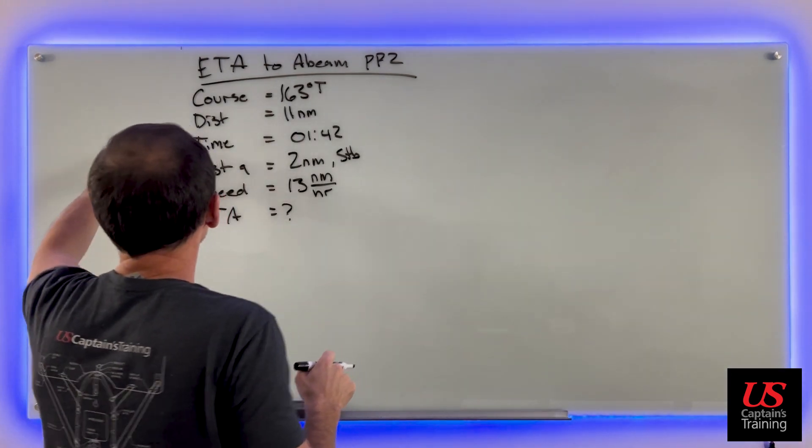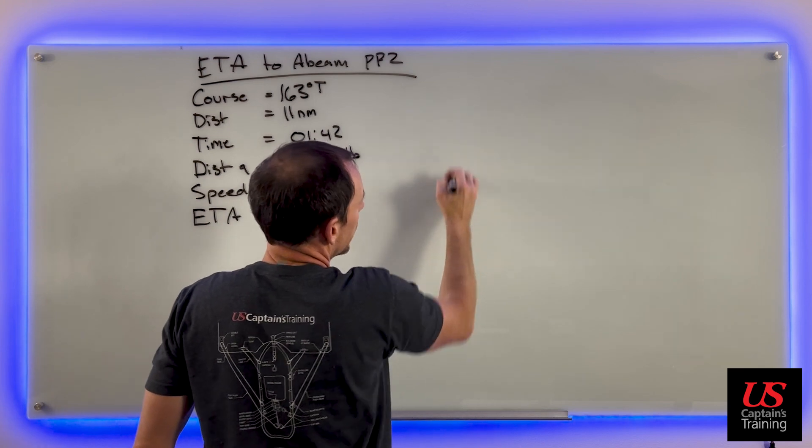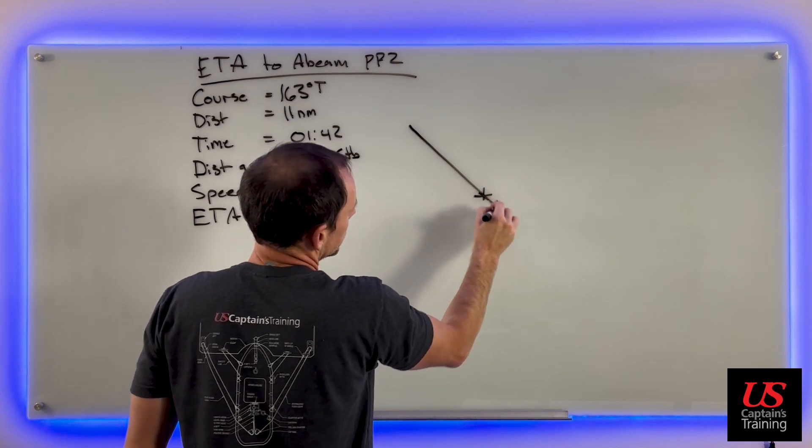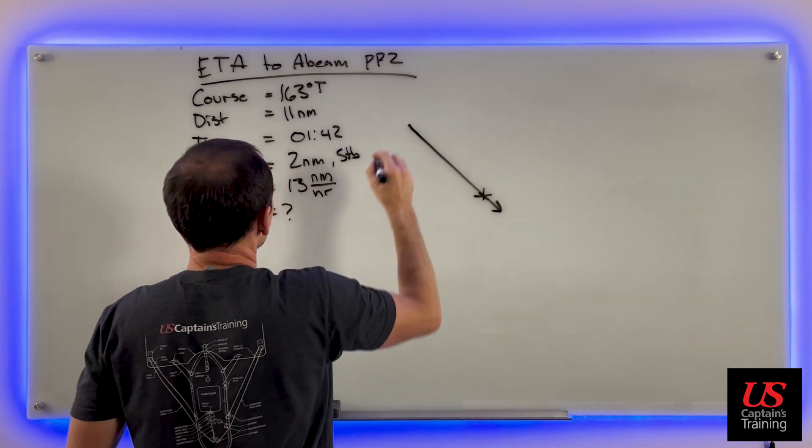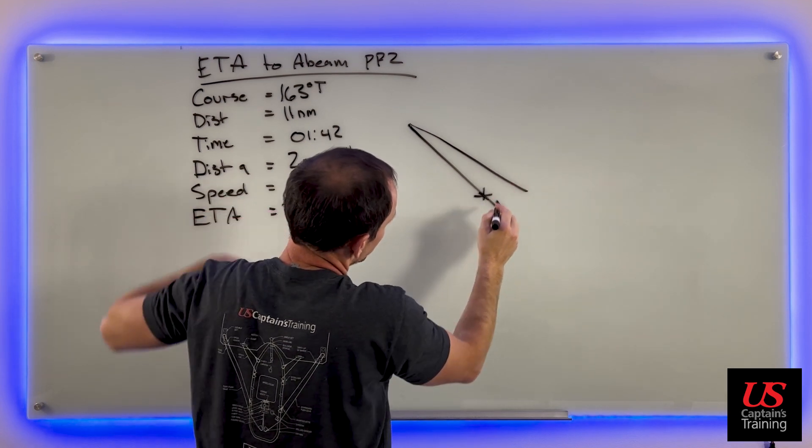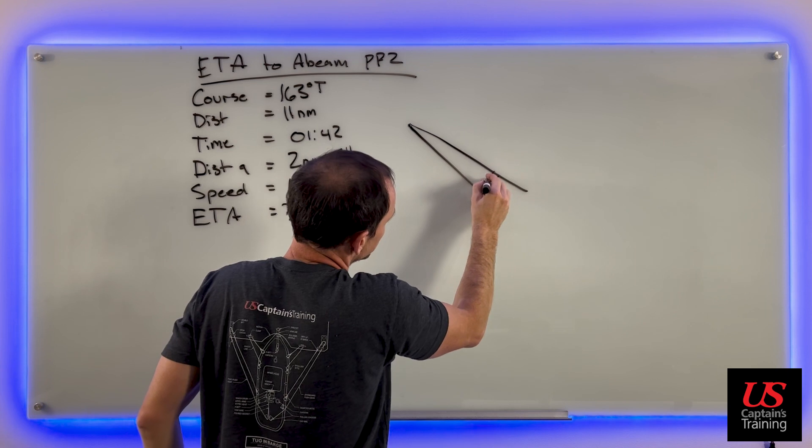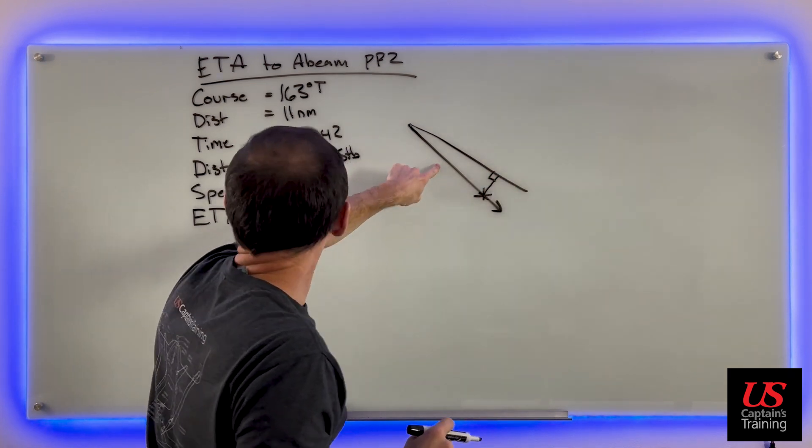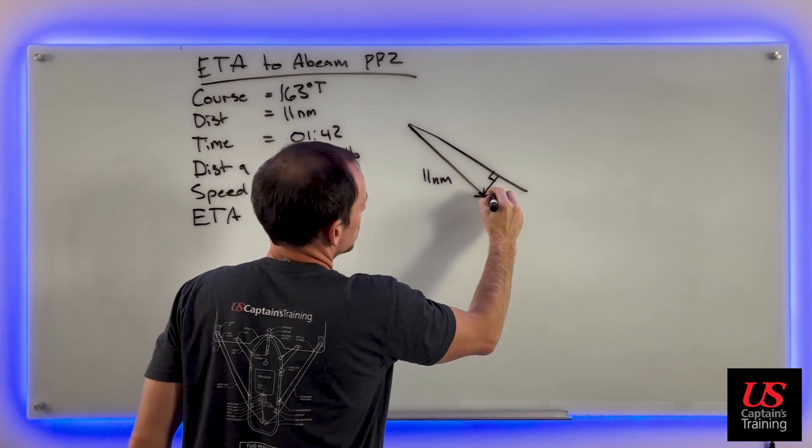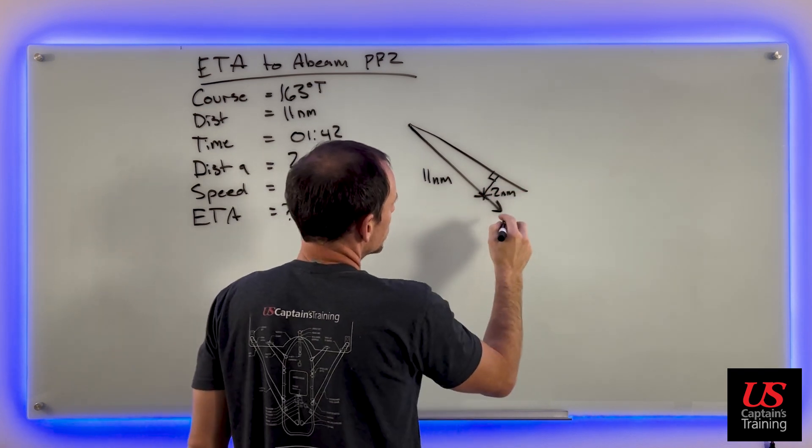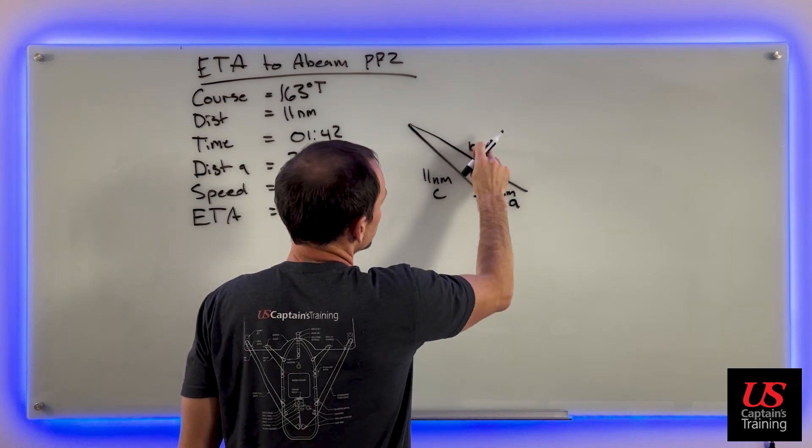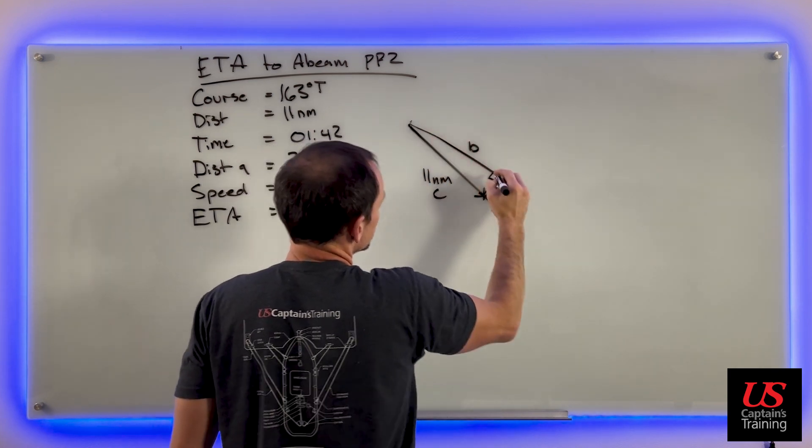First step, we're gonna make our triangle. What's our course? 163. 90, 180 is down, 163 is gonna be something like this. We sight a light at a given distance and we're keeping it to starboard. Our course is here, and it's gonna be abeam so we know it's 90 degrees. It gave us this distance, 11 nautical miles, and this distance, 2 nautical miles. I like to say this is a and this is c, so a, b, c. We're looking for b - we want to find this distance so we can get an ETA.